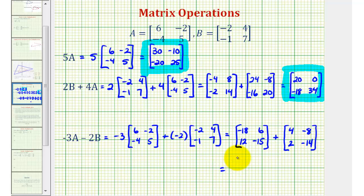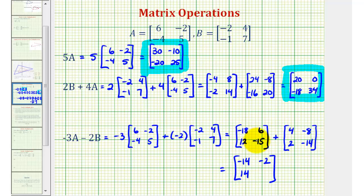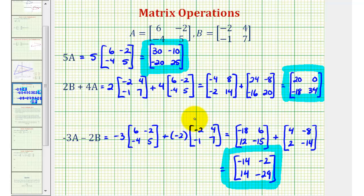To find the sum we'll add the corresponding elements. Negative 18 plus four is negative 14. Six plus negative eight is negative two. Twelve plus two is 14. And negative 15 plus negative 14 is negative 29. This would be negative three A minus two B, or negative three A plus negative two B. I hope you found these three examples helpful.